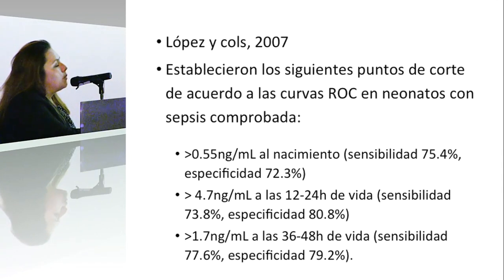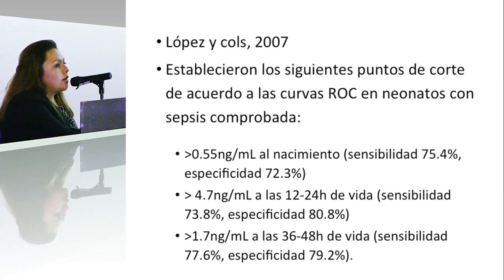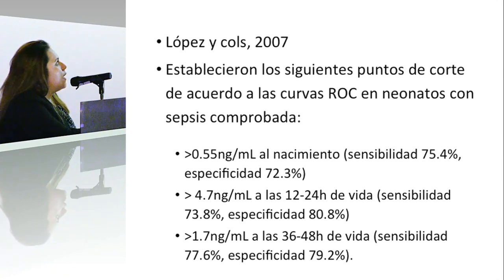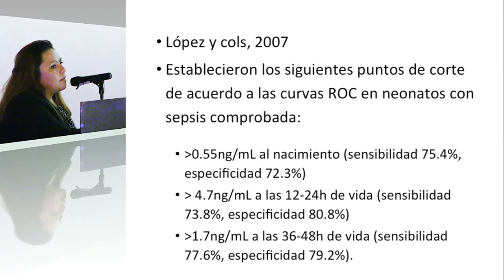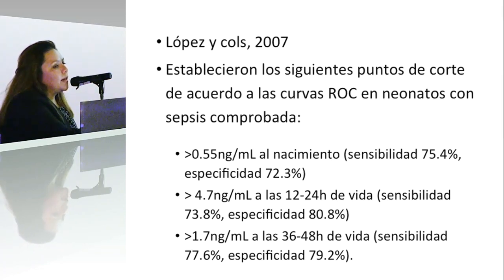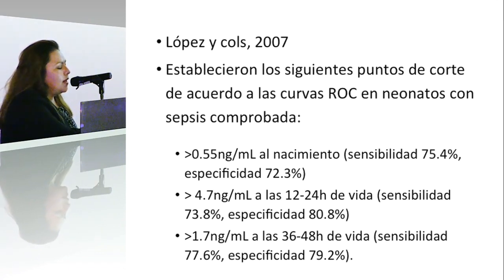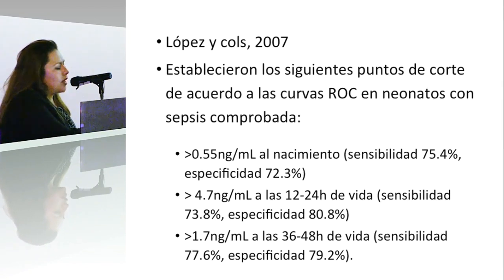No existe un consenso sobre los cortes de la procalcitonina en recién nacidos prematuros; las referencias más importantes son las de López y colaboradores y la de Chiese y colaboradores, más reciente. Hay que tener cuidado en la interpretación: un valor muy alto al nacimiento se va a asociar con sepsis; si se toma dos o tres días después, podemos esperar valores muy altos que son normales en estos pacientes. Si se toma como marcador de sepsis neonatal tardía o nosocomial, los valores se pueden aplicar igual que en recién nacidos de término o en edad pediátrica.